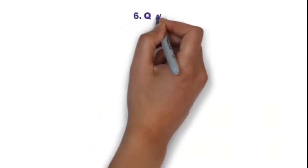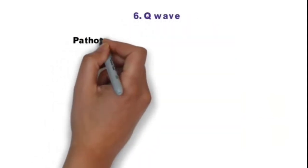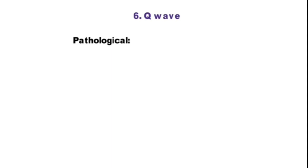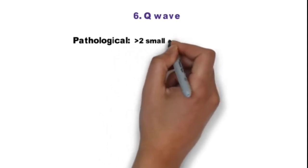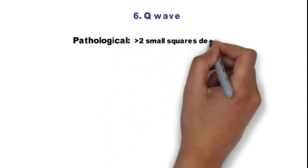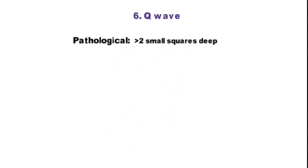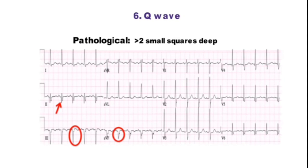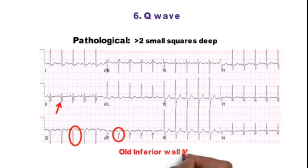Step 6 is Q wave. It is called pathological if greater than 2 small squares. It usually indicates current or past MI. As you can see, deep Q waves in inferior leads - so this is ECG of old inferior wall MI.